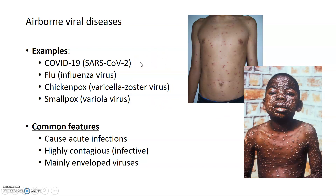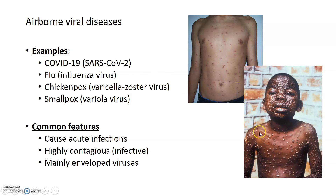Some examples of airborne viral diseases can be seen at the top of the slide. One we're all familiar with is COVID-19, caused by the SARS virus; the flu, caused by an influenza virus; and, perhaps surprisingly, the two pox viruses — chickenpox and smallpox — are both transmitted through the air in respiratory droplets. This is a little unexpected, because we generally associate chickenpox and smallpox with rashes or skin disorders. Chickenpox presents as blister-like pustules, while smallpox shows larger pus-filled rashes — not what we'd typically think of as airborne diseases.